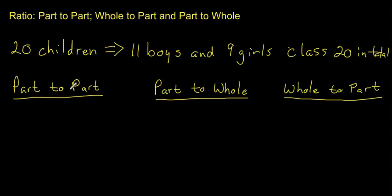In a part-to-part comparison, if we were looking at ratio and just part-to-part, then we would say maybe there are 11 to 9 boys. So like there are 11 boys to 9 girls, so this is a part-to-part relationship. We're looking at this part and we're looking at this part, and we're comparing them.